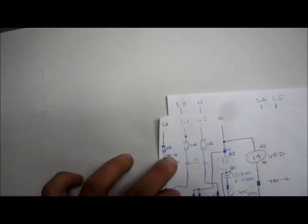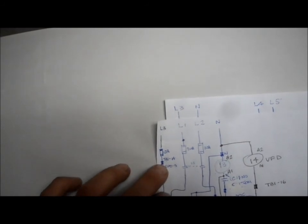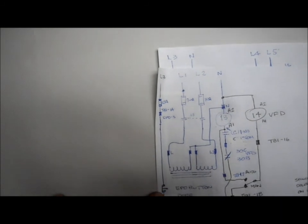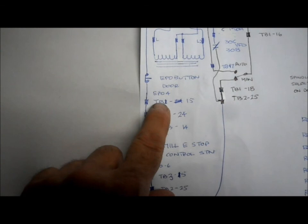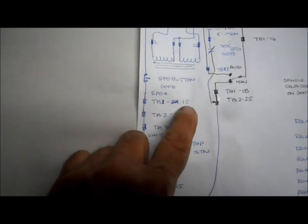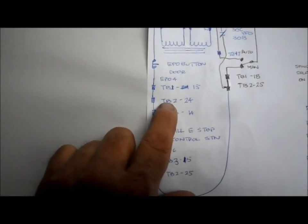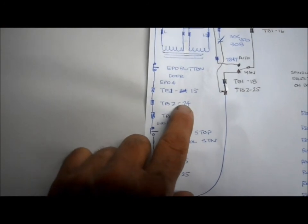And where it starts, it comes from the control fuse, works its way down to terminal block number four, terminal block one, TB1, terminal 14. Every time you see this symbol, that's what it means. Now it's part of the EPO string and it's going to go down. It goes to the EPO button mounted on the door, goes down to terminal block one and terminal 15.